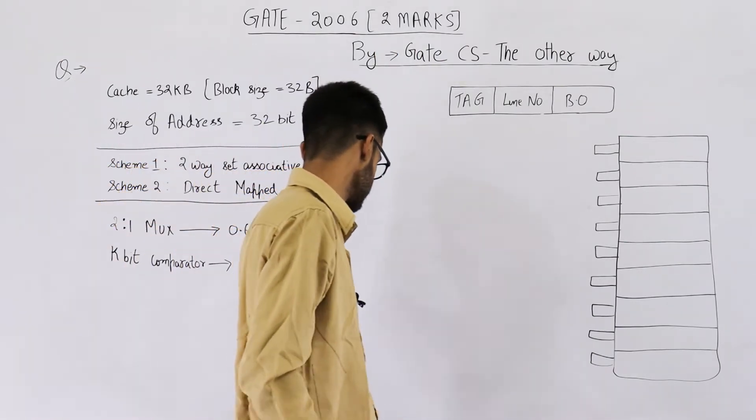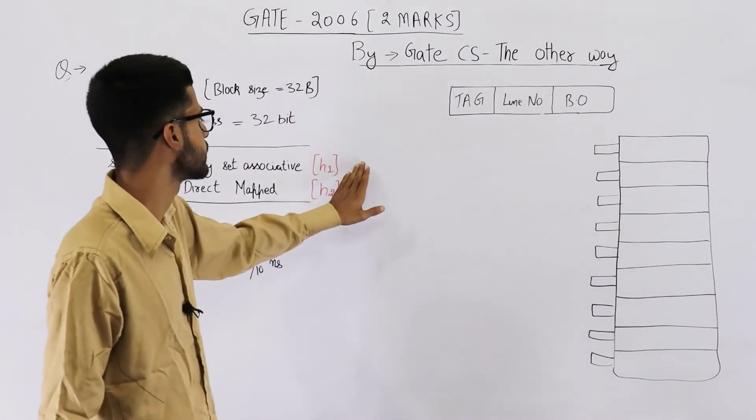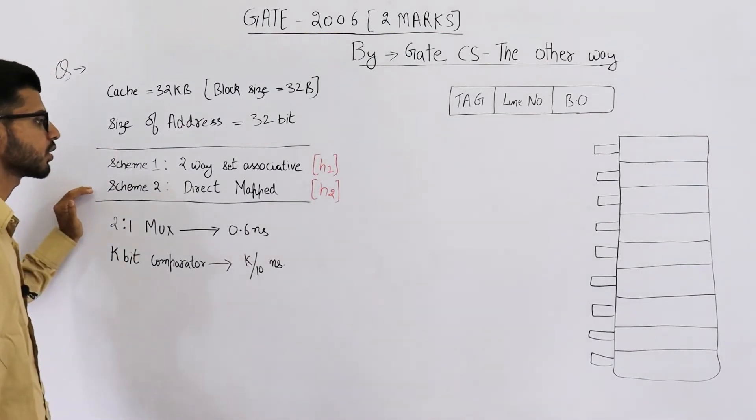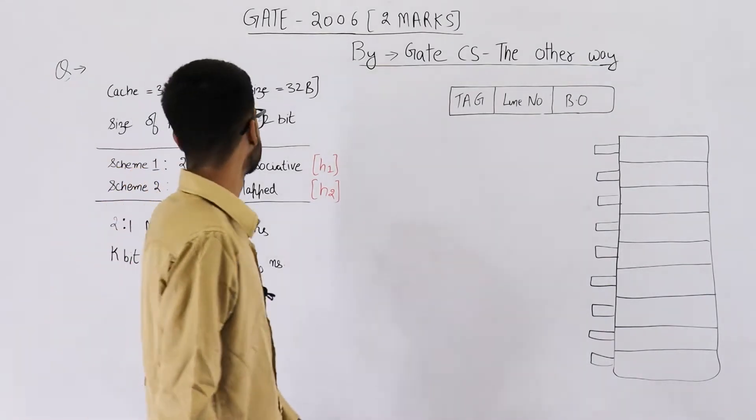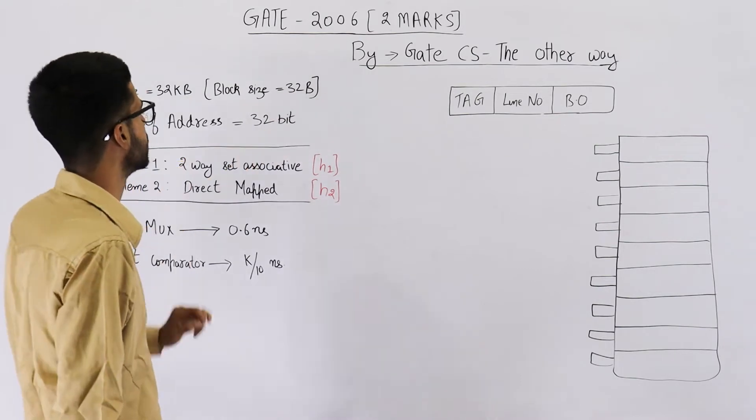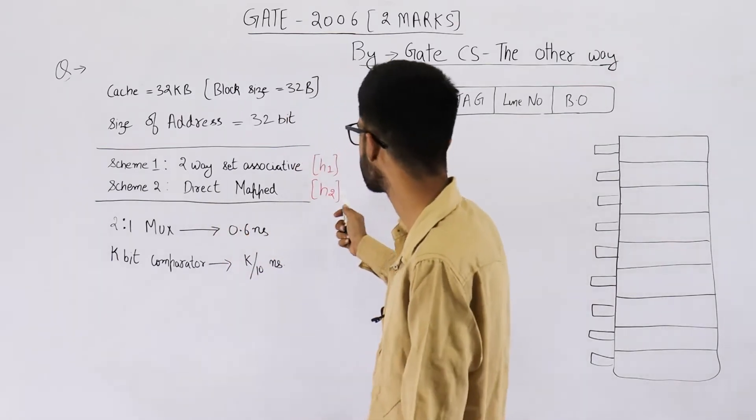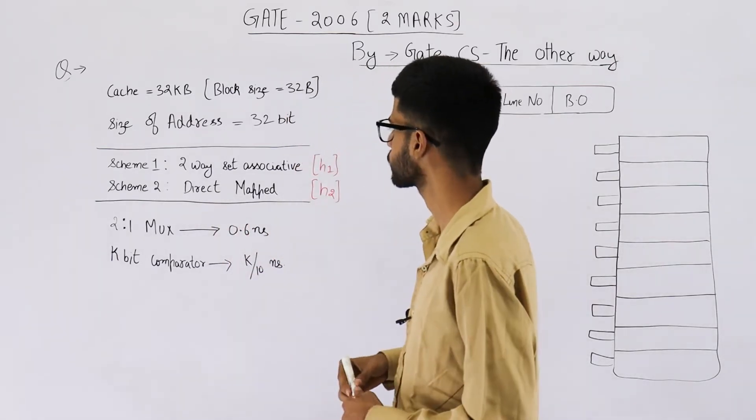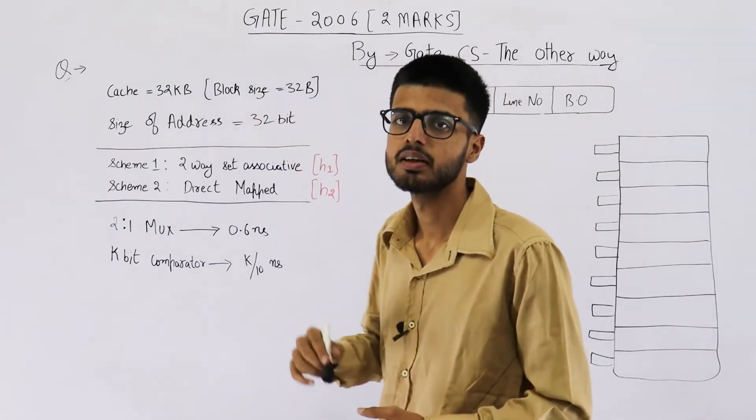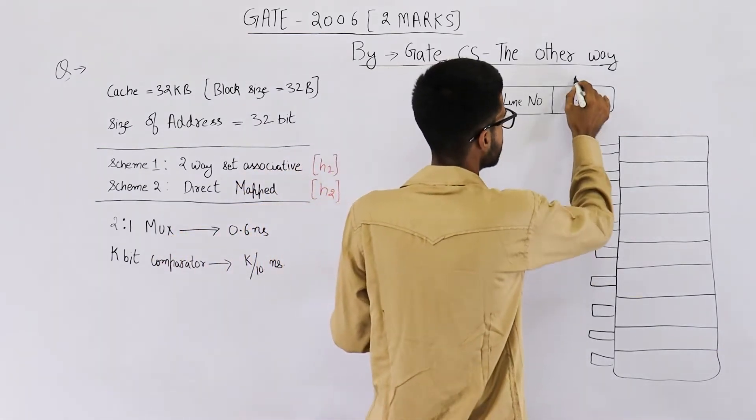So they're asking you to find the value of h1 and h2, that is hit latency in case of two-way set associative as well as in case of direct mapped. Now the cache that they have given you is 32 KB with a block size of 32 B. First of all, let's discuss about direct mapped. The second one having hit latency h2. You can see the block size in both cases is 32 B. That means there will be five bits in block offset. So this one will be five bits.